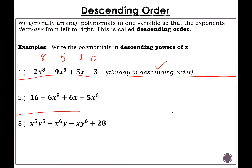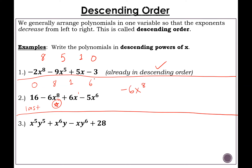Number two is not in descending order. Let's look at the degrees: the first term 16 is a constant with degree zero, negative 6x to the eighth has degree 8, plus 6x has degree 1, and minus 5x to the sixth has degree 6. Rearranging from highest to lowest: the highest is the one with 8, so we write minus 6x to the eighth first. Then the next highest degree 6, so minus 5x to the sixth. Then degree 1, plus 6x. And finally the constant term, plus 16.